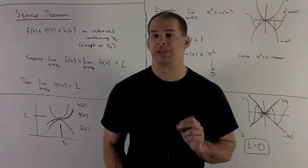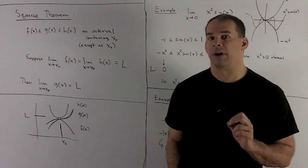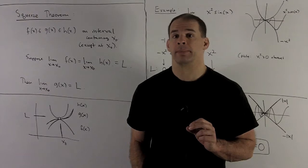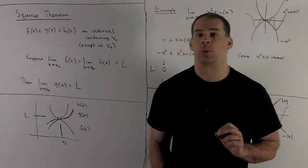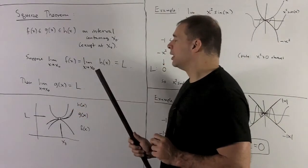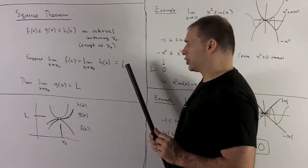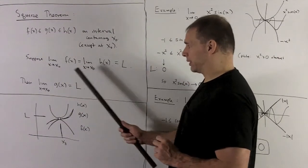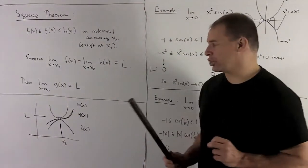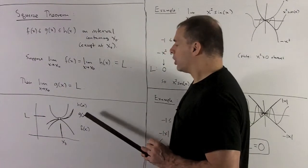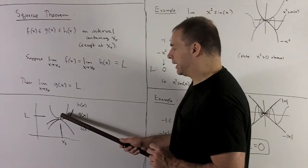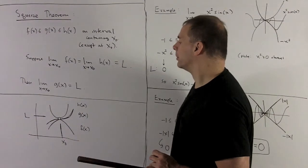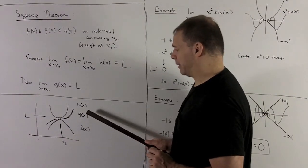Another rule we'll get a lot of mileage out of is the squeeze theorem. For the squeeze theorem, we're going to have three functions f, g, and h, defined on an interval around x₀. We assume the inequality f ≤ g ≤ h, and that the limits of f and h are equal. If this happens, then the limit of g is also equal to that common limit. The picture: g is trapped between f on top and h on bottom, and since their limits are equal, all three functions meet up at the same point over x₀.